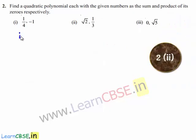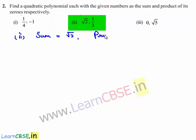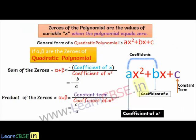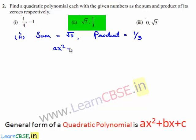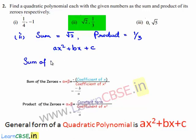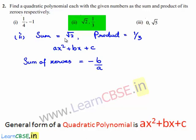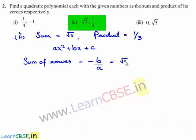Coming to the second bit, the sum of the zeros given is √2 and the product is 1/3. Let us assume the required quadratic polynomial to be ax² + bx + c. We know that the sum of zeros is equal to -b/a, and the given sum is √2, which can be written as √2/1. By comparing, we can say b = -√2 and a = 1.